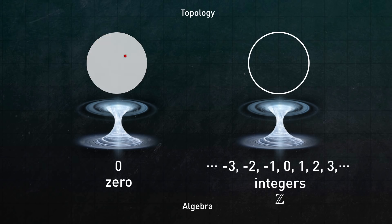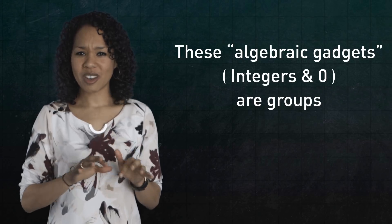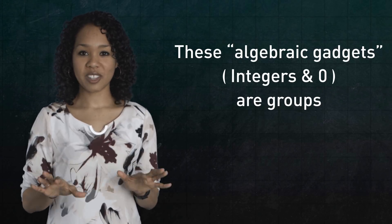So, to a topologist, a disk is like the number zero, and a circle is like the integers. By the way, I'm referring to the integers and zero as algebraic gadgets because they're actually groups. But don't worry if you're not familiar with group theory. We won't need it for this episode.